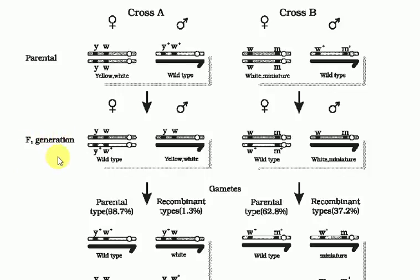When the cross is made, an F1 generation is produced containing wild type and yellow-white type organisms. The parental types are 98.7%, meaning almost all individuals in the next generation are exactly similar to the parents — linkage was very high. The genes present on the same chromosome are transferred as-is, so parental combinations are 98.7% and recombinant types are only 1.3%.